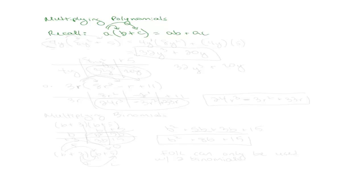Now we're going to use that with polynomials. So say I have, for example, 4y times 8y squared plus 5. This 4y is my a, the 8y squared is my b, and the 5 is my c. So I'm going to do the same thing — I'm just going to distribute. So my first term is going to be my a, which is 4y, times my b, which is 8y squared, plus my a, which is 4y, times my c, which is 5.